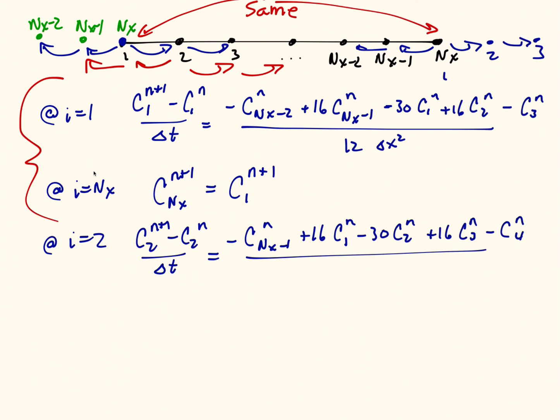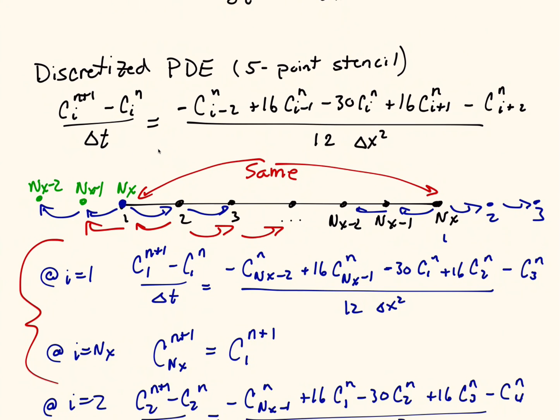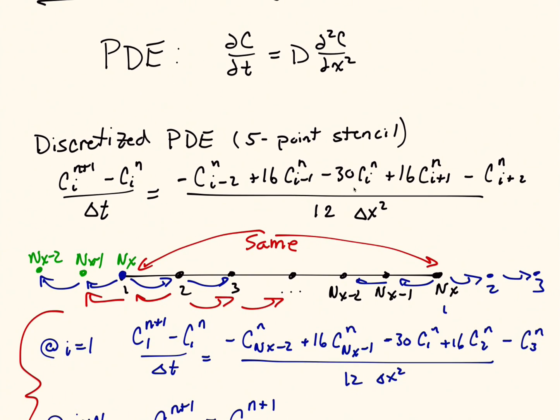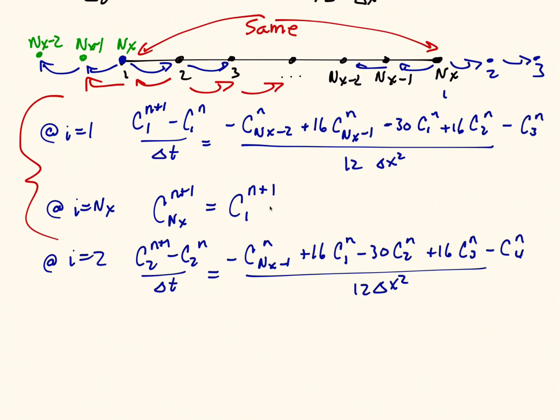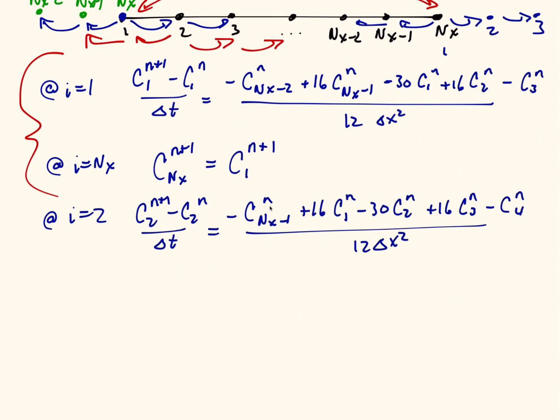So you can do this periodic boundary condition for any points that intersect the boundaries. Now this type of discretization where it happens at the second point only happens when you have these very large stencils, which in the 303 class, we don't typically cover. We typically do three-point stencils, but I thought that this would show the point of periodic boundary conditions maybe a little bit more. So that's all for this video.